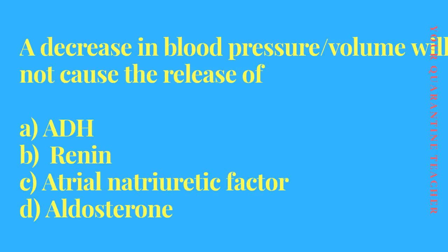Next question: a decrease in blood pressure or volume will not cause the release of? Option A: ADH, Option B: Renin, Option C: atrial natriuretic factor, Option D: aldosterone. ADH and aldosterone are released to raise blood pressure, and ANF is also released, so Option C is the answer.